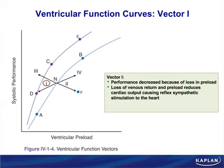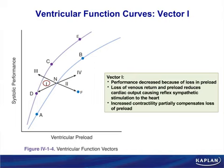Notice: if it were just a pure loss of preload, we'd go from N to A, with much lower performance. Instead we're at D, because the initial event was a loss of preload with a reflex increase in contractility trying to compensate. We know it's Frank-Starling because preload and performance go in the same direction.